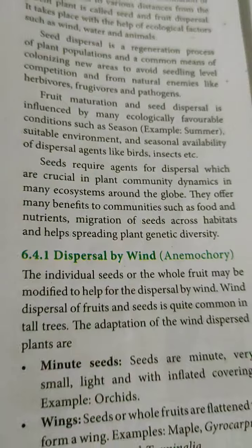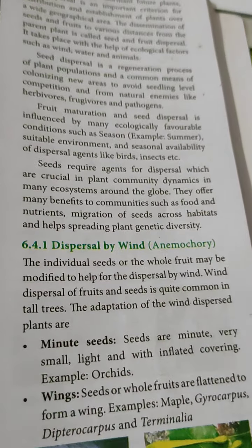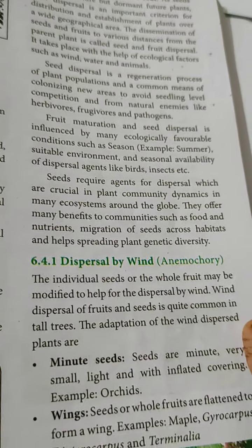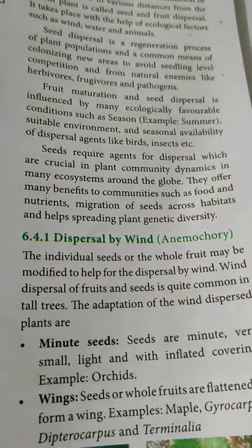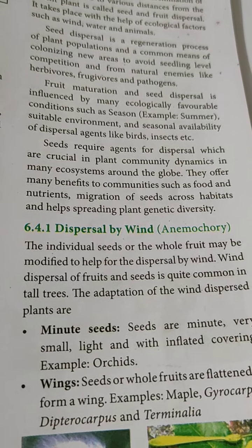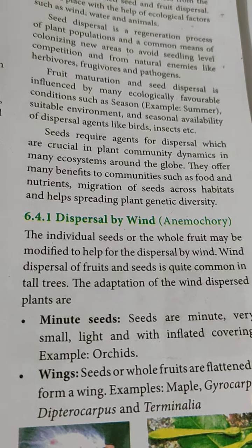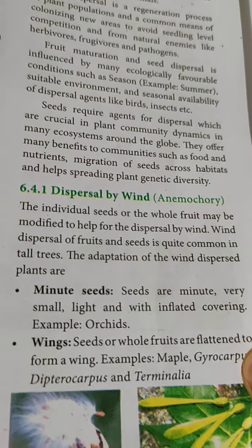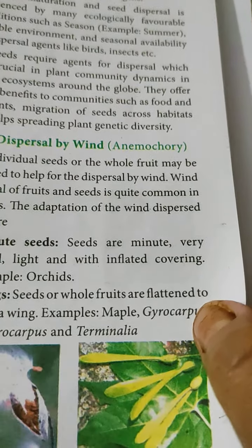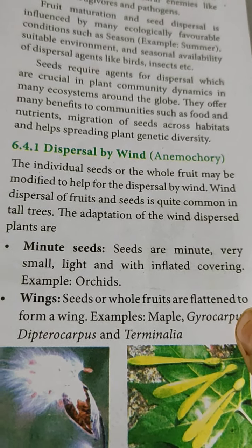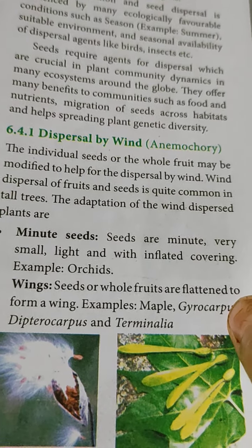Now we will discuss dispersal by wind, one by one. The term for wind dispersal is anemochory. Individual seeds or whole fruits may be modified to help dispersal by wind. Wind dispersal of fruits and seeds is quite common in tall trees. The first adaptation is minute seeds — seeds that are very small, lightweight, with inflated coverings and wing-like structures. Example: orchid.